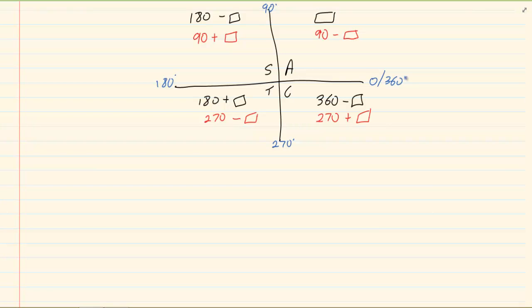Here is your basic reduction. Reduction can go two ways: it can go with the 180-degree type — working with 180 minus something, 180 plus something, or 360 minus something. The second type is the 90-degree type: 90 minus, 90 plus, 270 minus, 270 plus. But when you have a choice, you always choose 180 before 90.